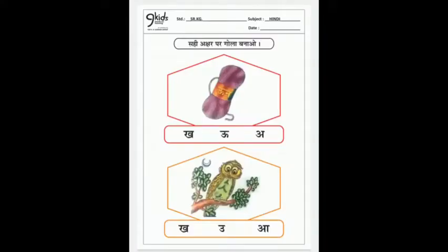So children, this is the worksheet which I gave you yesterday. You have to circle the correct swar related to the object. Have you done it? Then let's check.